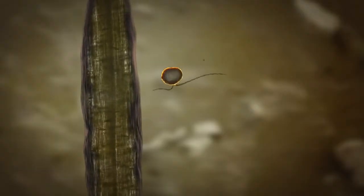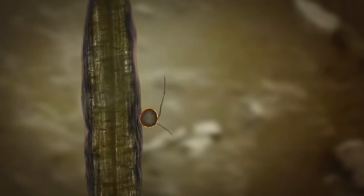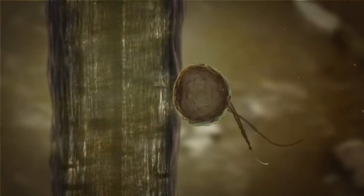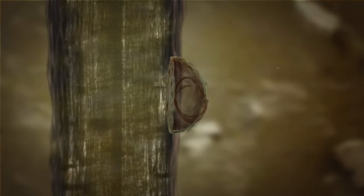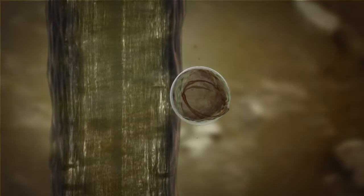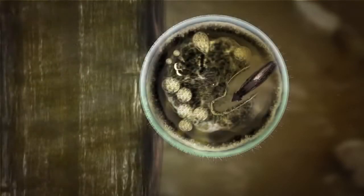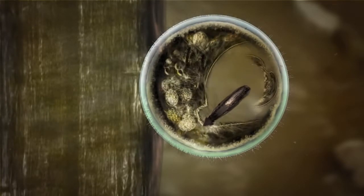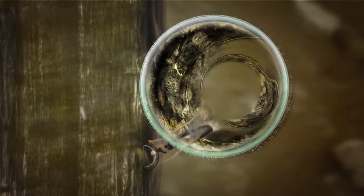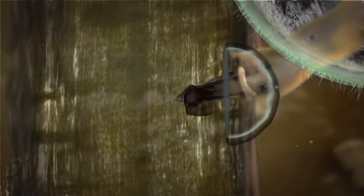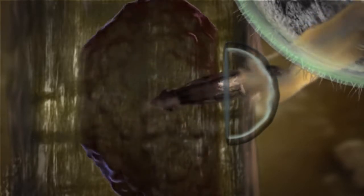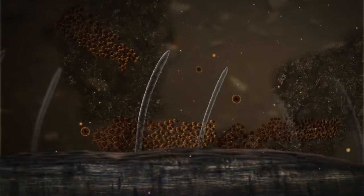The zoospore swims in soil water until it contacts a root hair, settles on the surface, and penetrates the wall of the root hair. The more resting spores that are present near the roots, the more root hairs become infected.